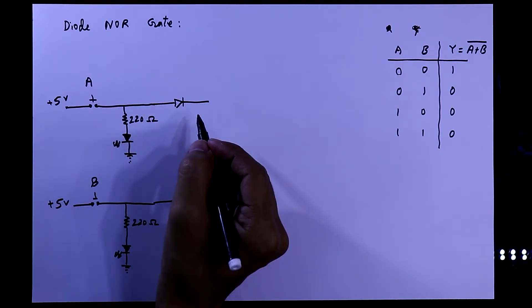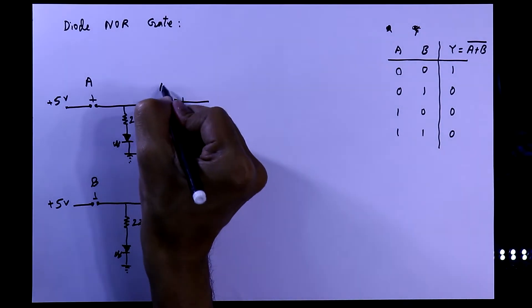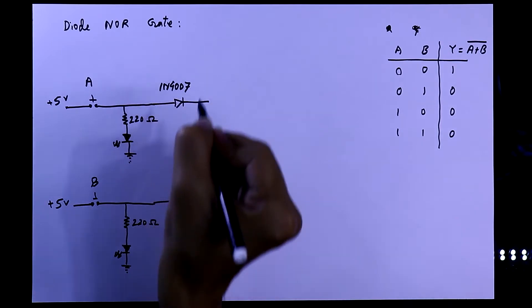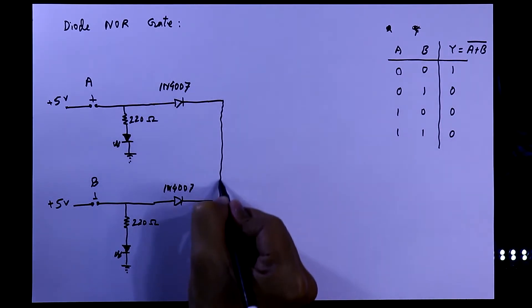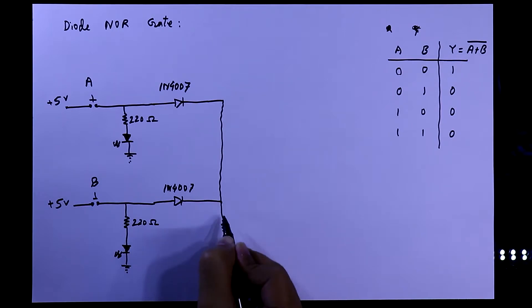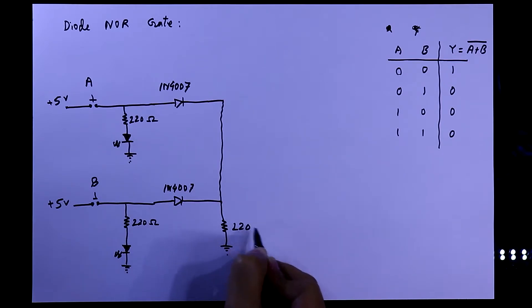We will use normal diode that is 1N4007. We will connect both the negative pin and then with a resistor. This resistor will be connected to the ground. Its value is 220 ohms.